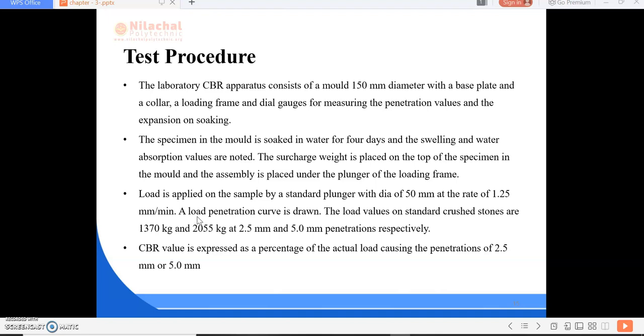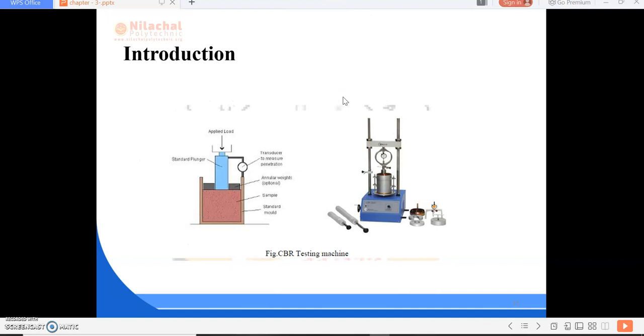To find the CBR at 2.5 mm penetration, CBR 2.5% equals P1 divided by 1370 into 100. In the same way, to calculate CBR value at 5 mm penetration, CBR 5% equals P2 divided by 2055 into 100.